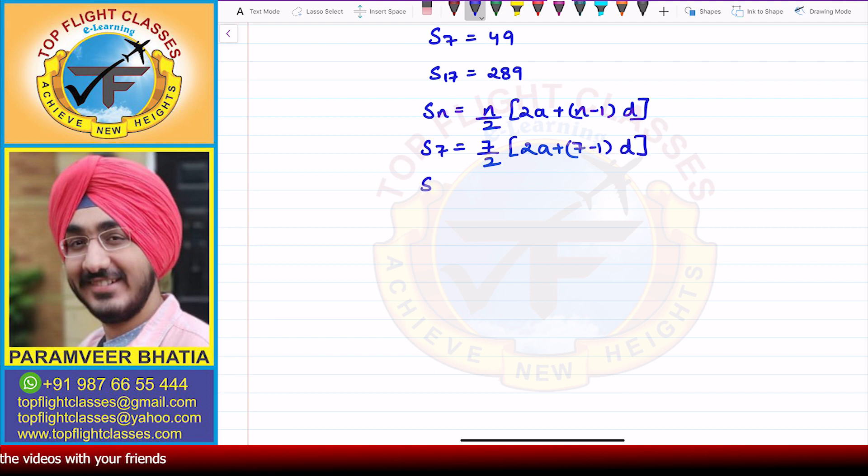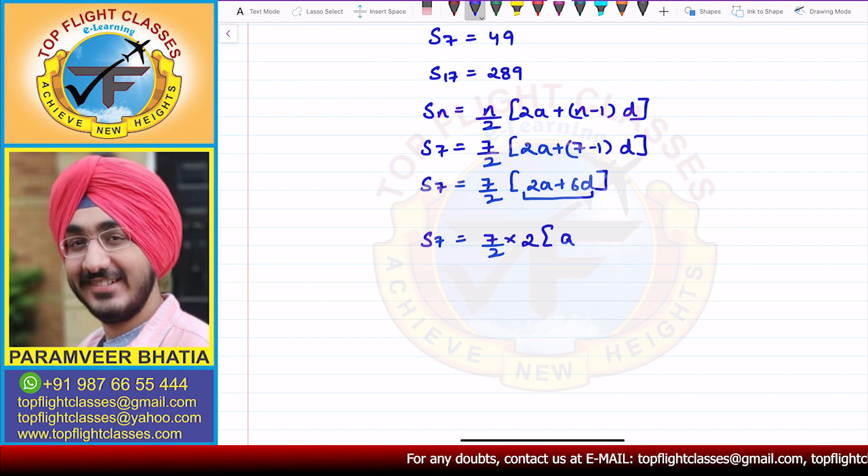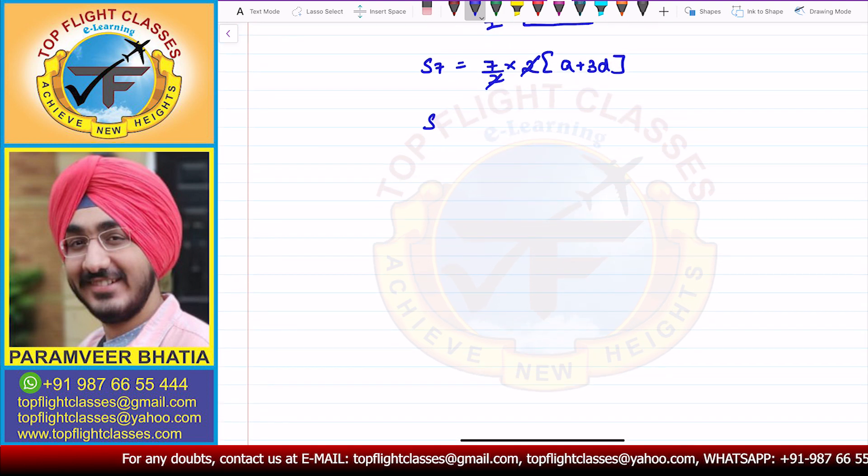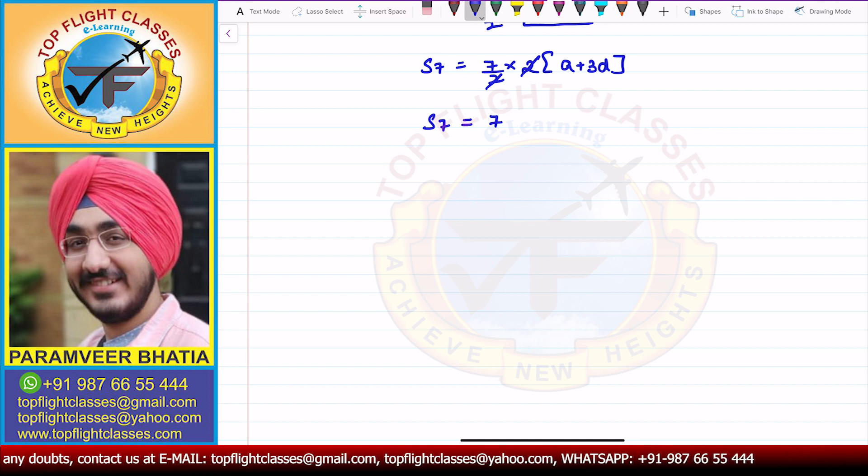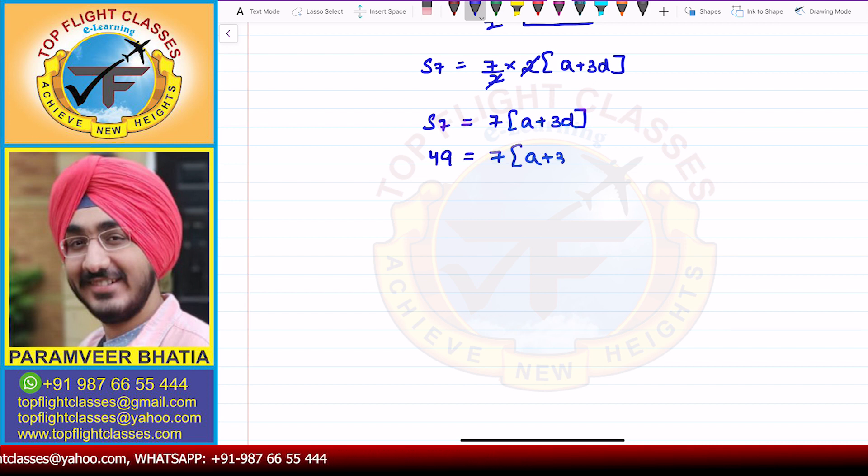So what I will get is S7 equals 7 by 2 times 2a plus 6d. So S7 equals 7 by 2 multiplied by 2 into a plus 3d. So here 2 and 2 cancel. What I get from here is that S7 equals 7 times a plus 3d. Now what is S7? S7 is 49. So 49 equals 7 times a plus 3d. Now 7 into 1 is 7 and 7 into 7 is 49. So from here I get that a plus 3d equals 7.